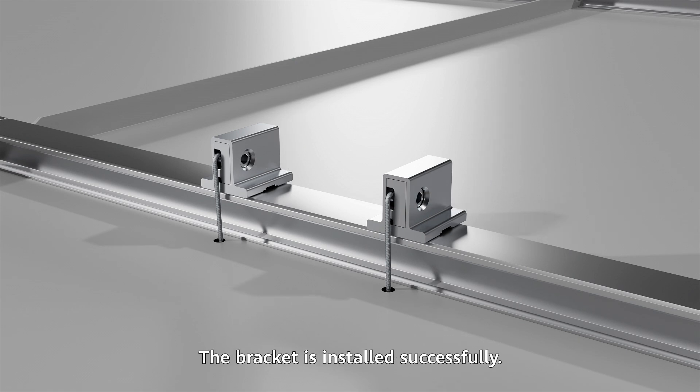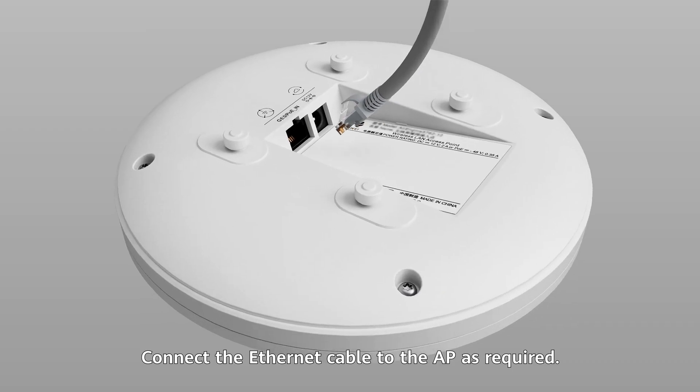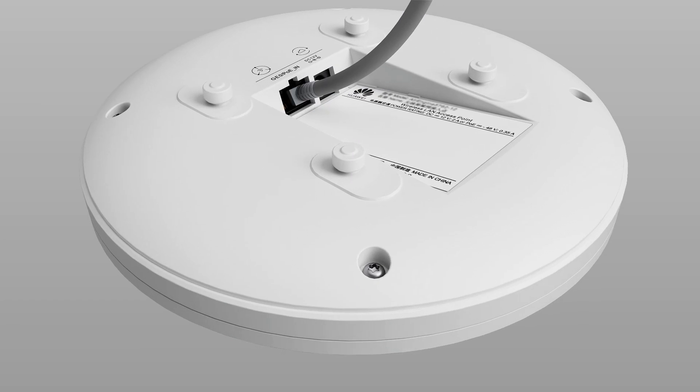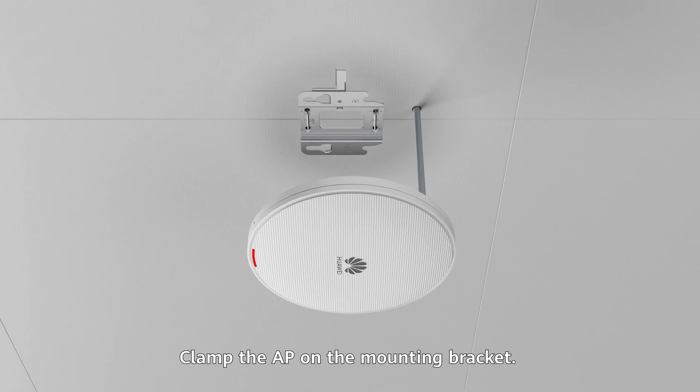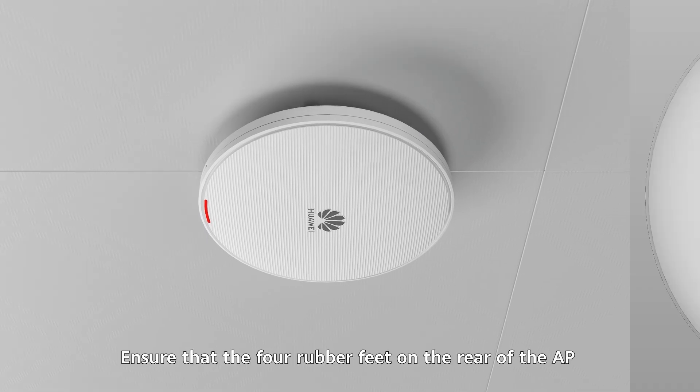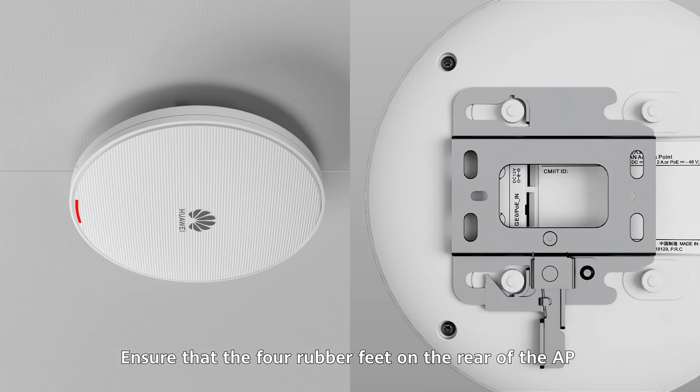The bracket is installed successfully. Connect the ethernet cable to the AP as required. Clamp the AP on the mounting bracket. Ensure that the rubber feet on the rear of the AP fit into the mounting holes.